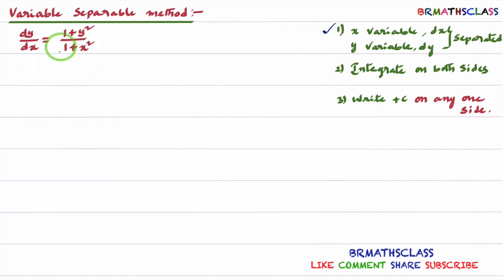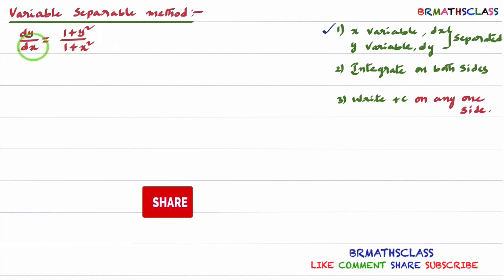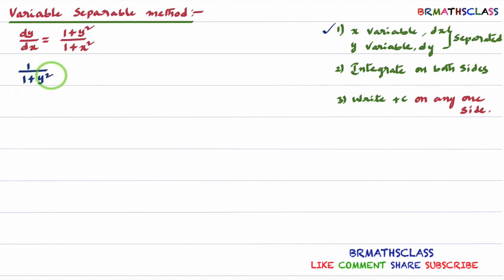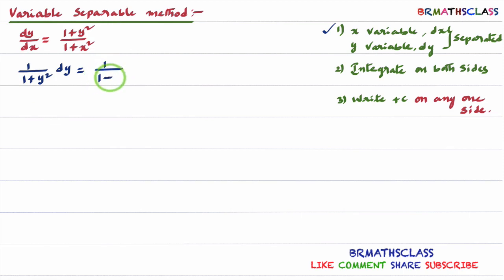I'll write all x terms and dx on one side, and all y terms and dy on one side. I'll take dx to this side and (1 + y²) to the other side. Then you will get: (1 + y²) dy equal to — taking dx to this side — (1 + x²) dx. You can observe that all y variables and dy are on one side, and all x variables and dx are on the other side.